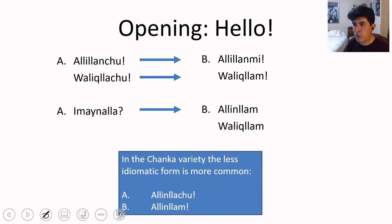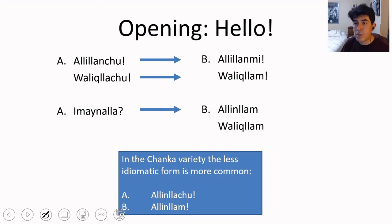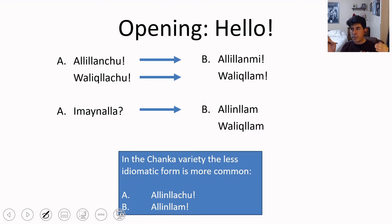When you say Imainalia, which means 'how are you doing' or 'howdy,' the possible answers include Aliliang — just fine — Walegliang — just fine, just good — or Cusisca, or any type of state you find yourself in. You could be happy, sad, tired, etc. That opens the possibility to many answers. Remember, this is the opposite of the idiomatic forms: Alilianchu only receives Aliliangmi as a reply, and Walegliachu only receives Walegliam.